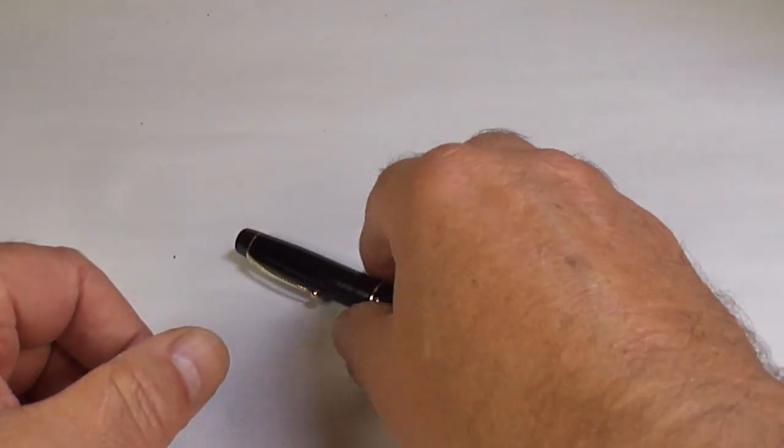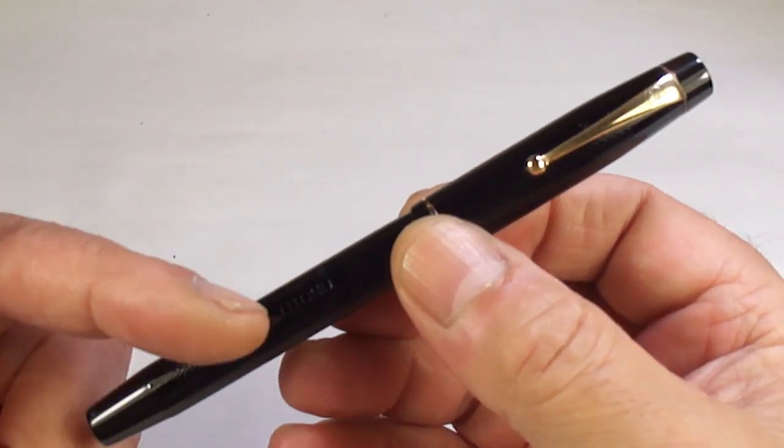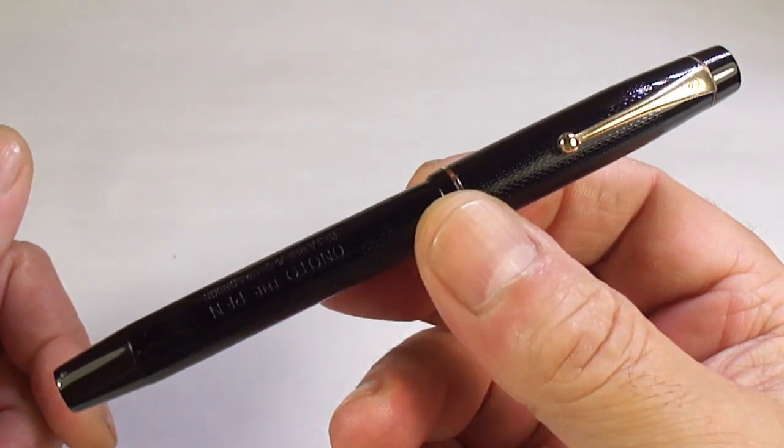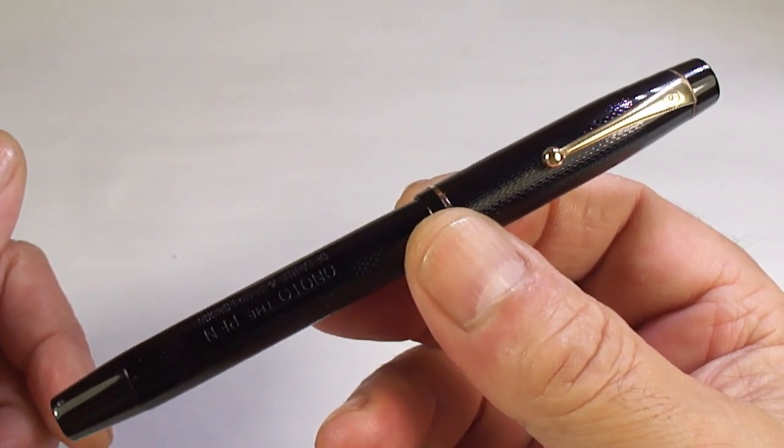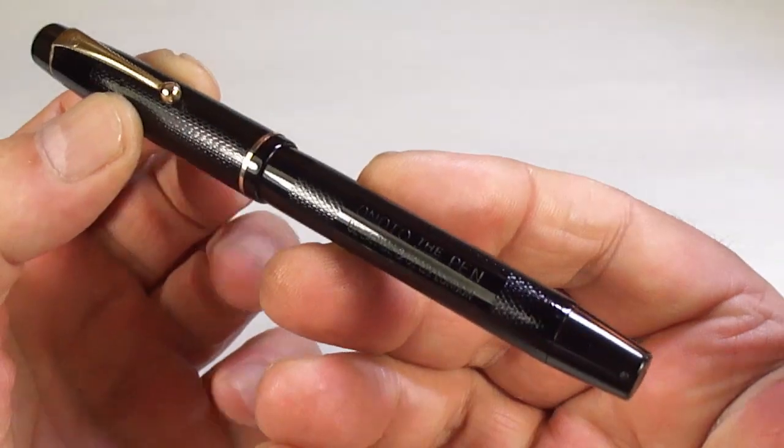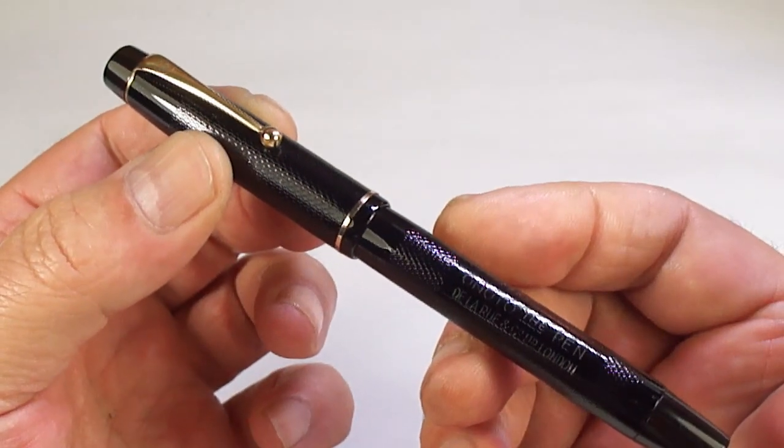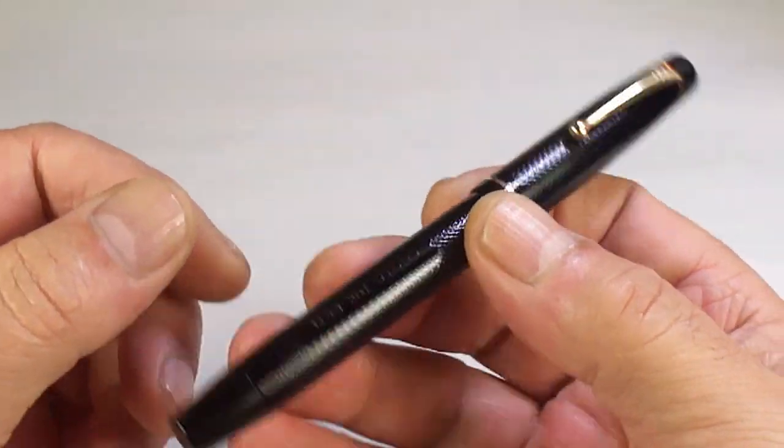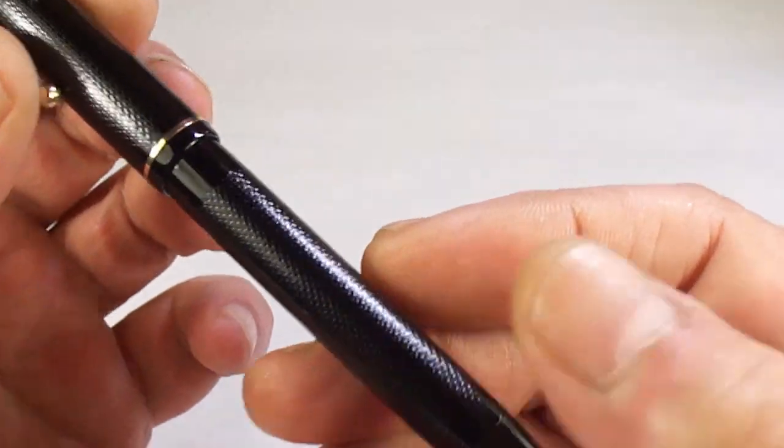After a little bit of TLC and a little bit of work, here we have the pen in question. What we've got for you here is an absolutely gorgeous Onoto pen, De La Rue and Company from London. This particular one is model 5601.